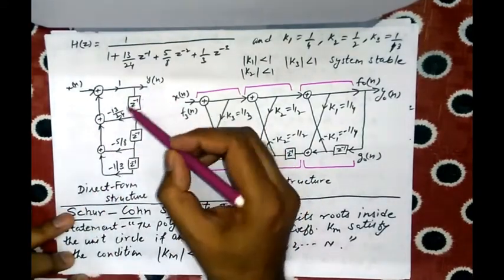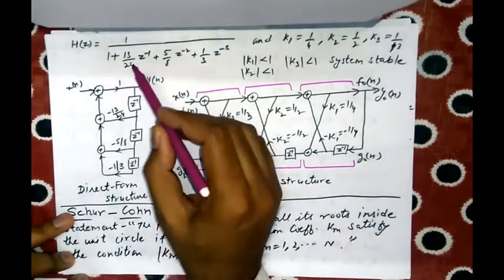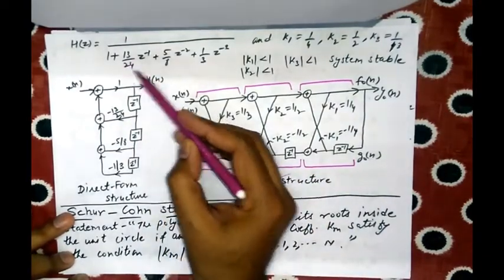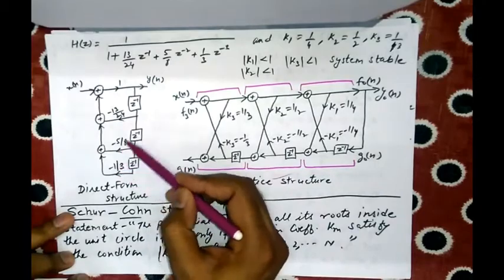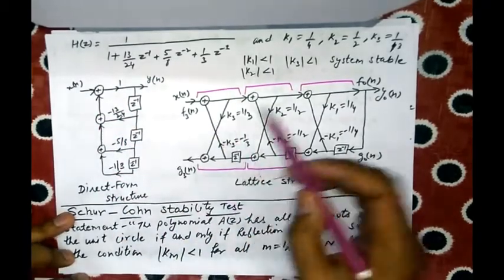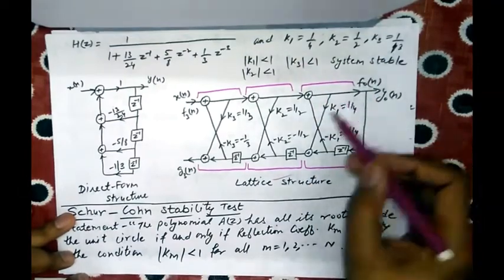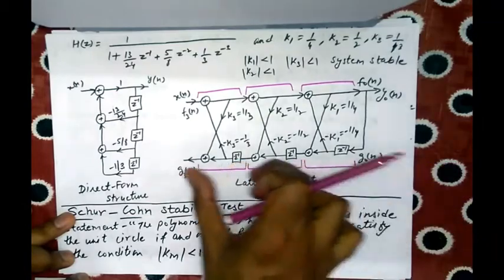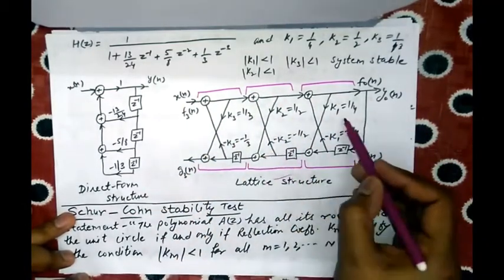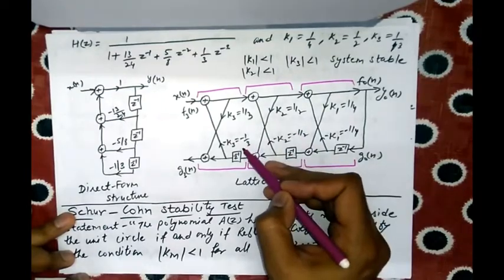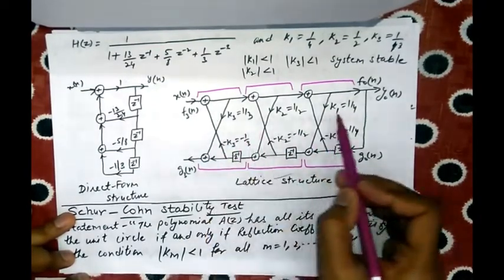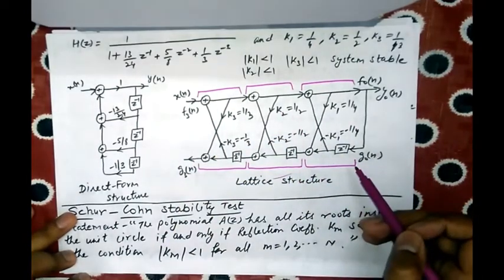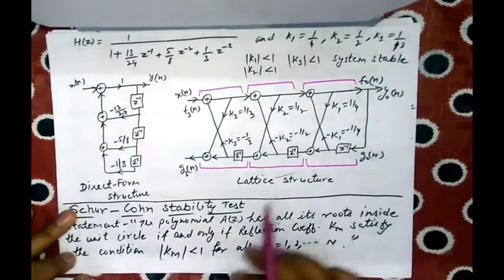Now with the lattice coefficients k1, k2, k3 determined, we can draw the structures. The direct form 1 structure uses filter coefficients 13/24, 5/8, 1/3. The lattice structure uses k1, k2, k3 values and follows the standard lattice diagram with stages m = 1, 2, 3, placing values k1, −k1, k2, −k2, k3, −k3 at each stage. This is the standard structure you are required to draw when asked.